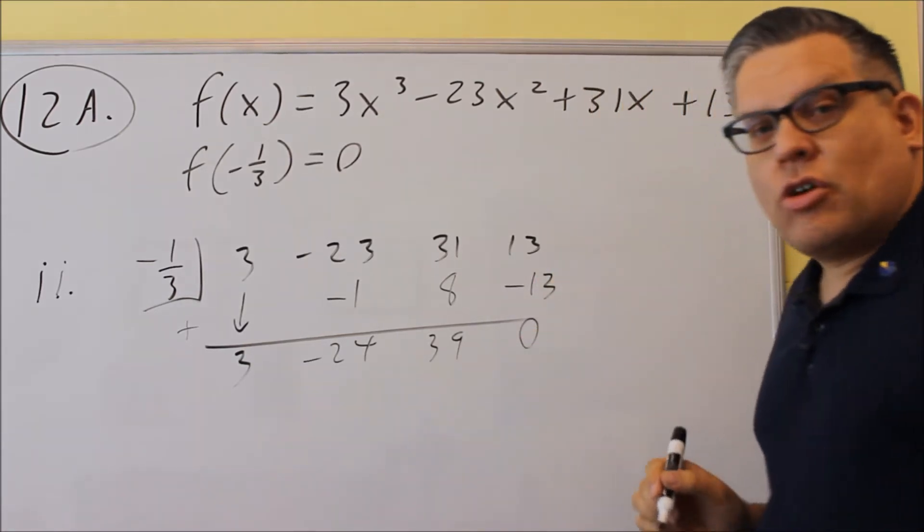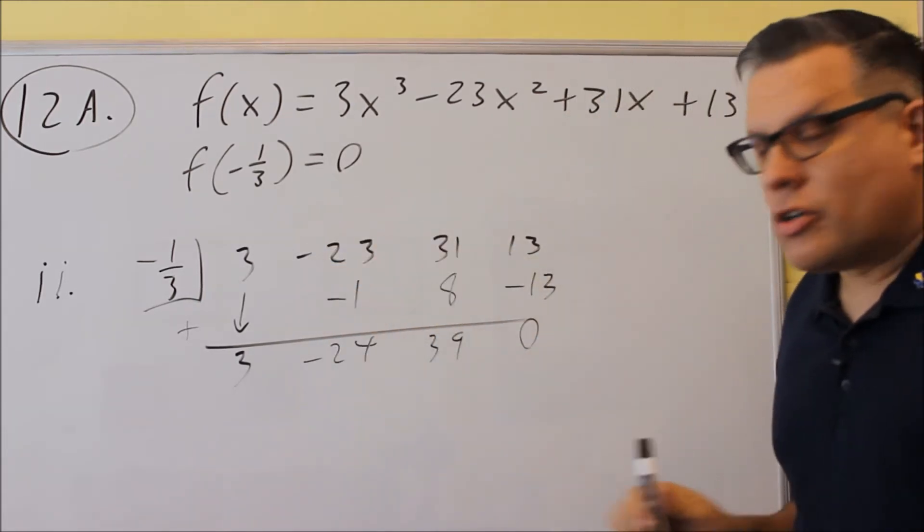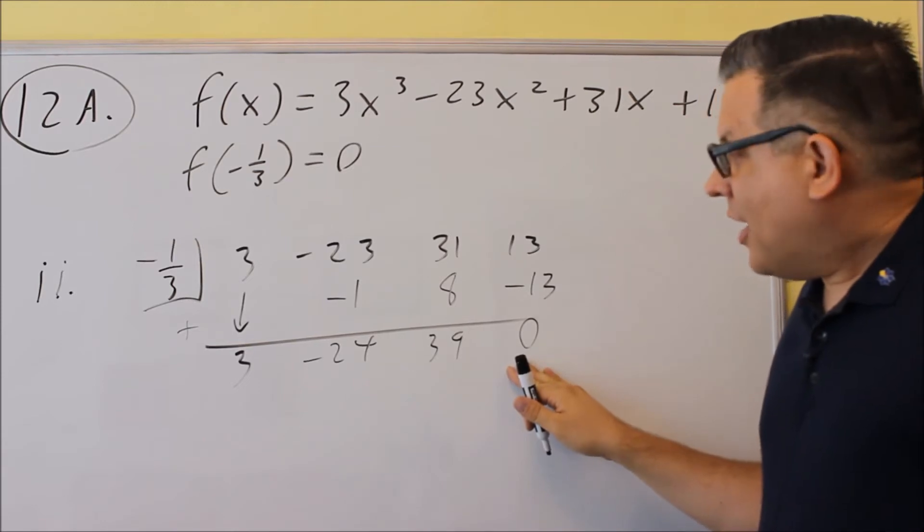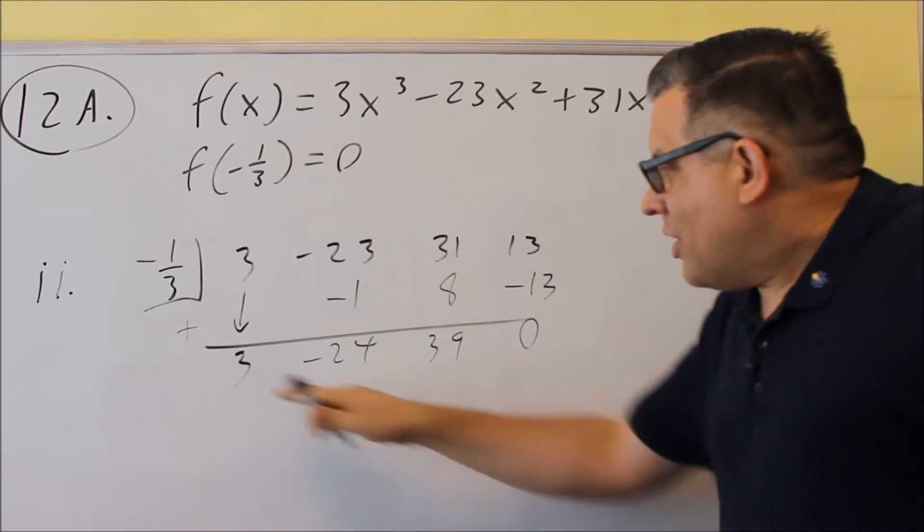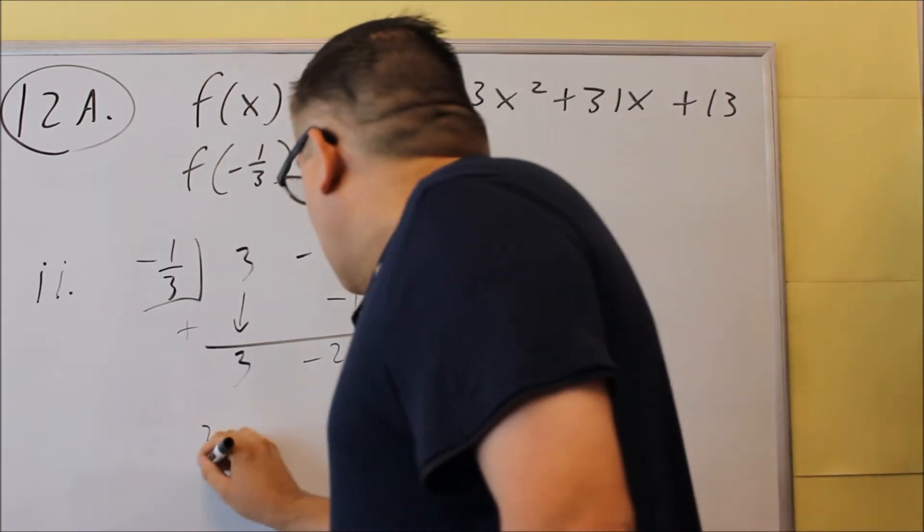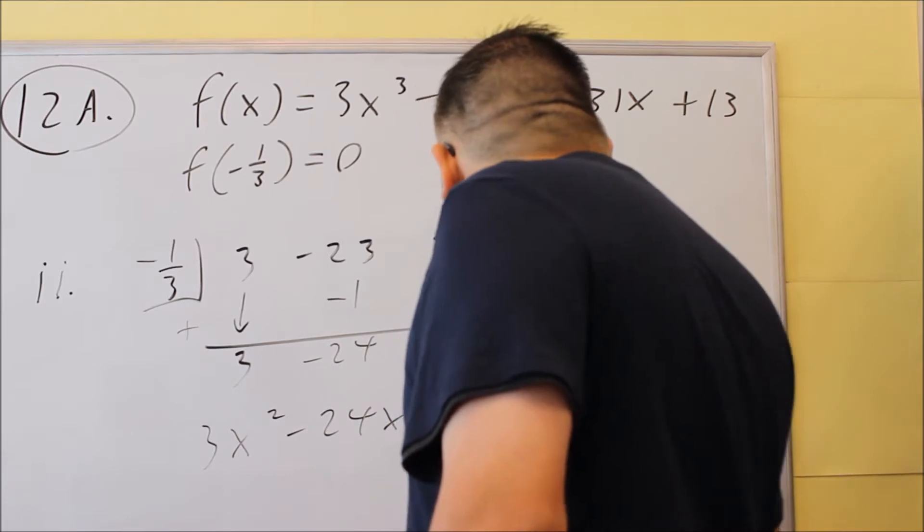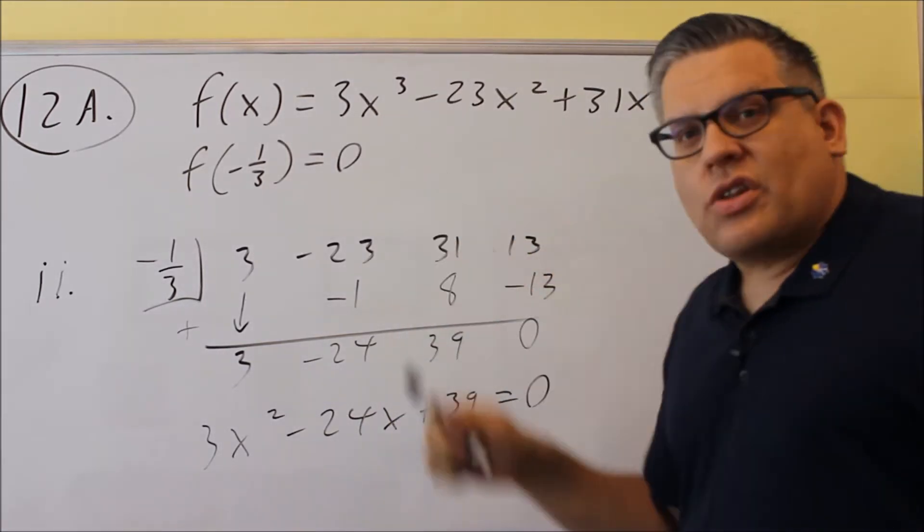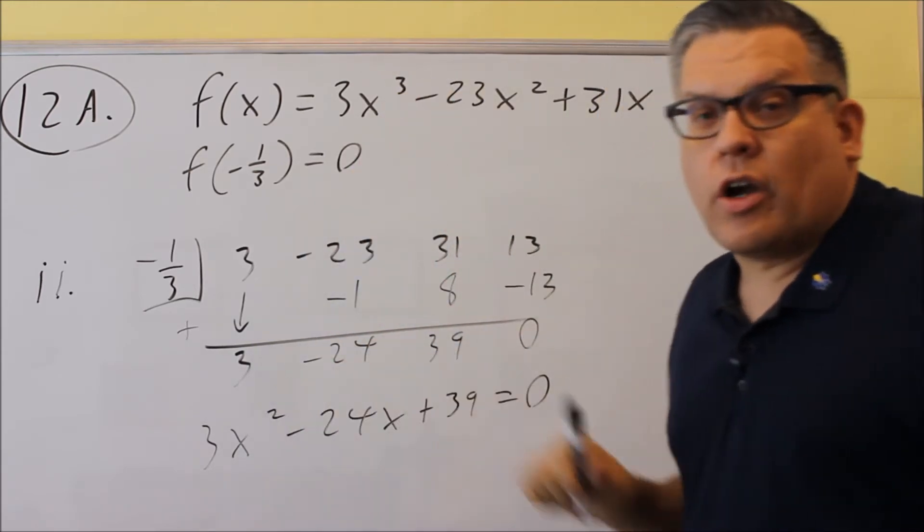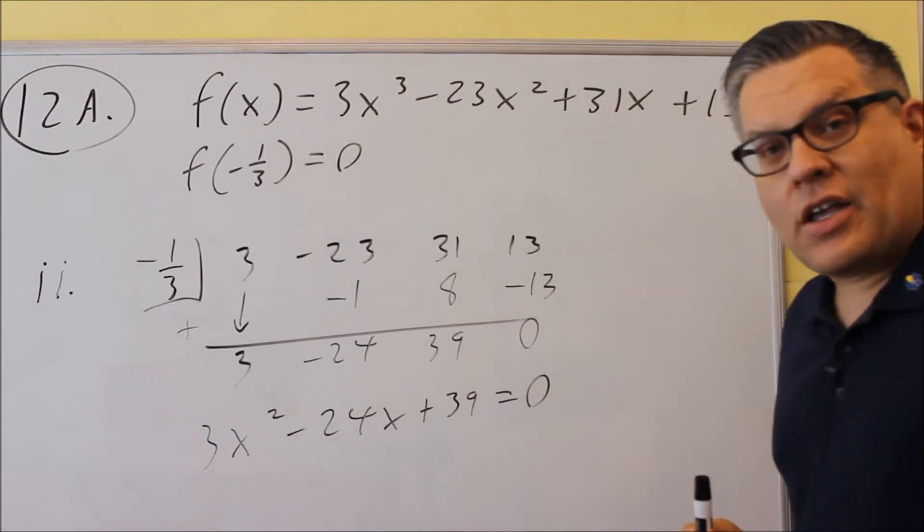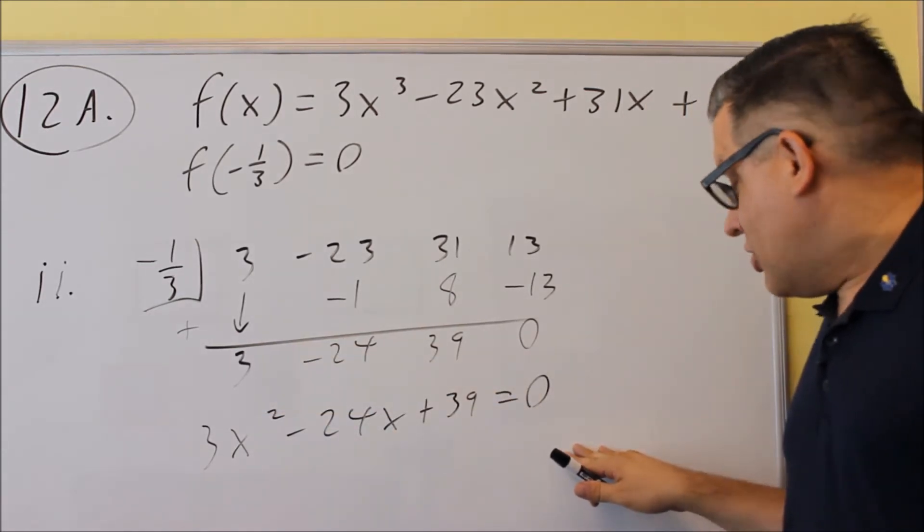And then we get a zero as expected. Now, if you don't get a zero here, that means you've got to go back and check your work, because you might have made a mistake somewhere, or it's possible you may have forgotten to put in a zero placekeeper. Now once we get done with this, what we're going to be left with is 3x squared minus 24x plus 39 equals zero. Whenever you do synthetic, it always drops the power down by 1. Originally it was a cube. Now it's going to be a square when we put our coefficients back in.